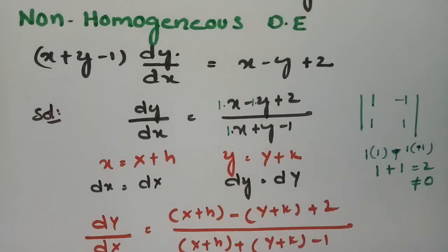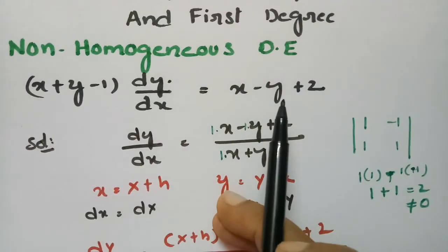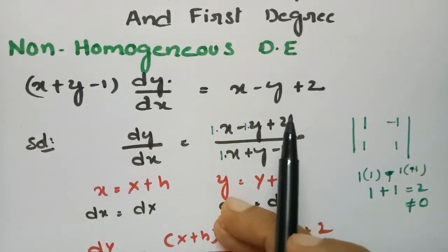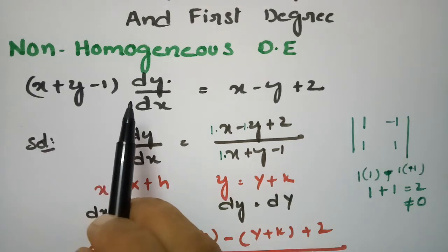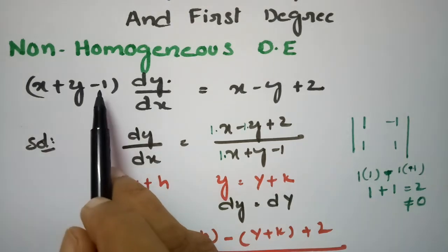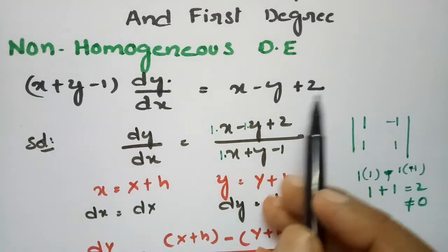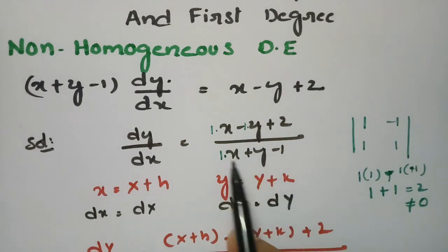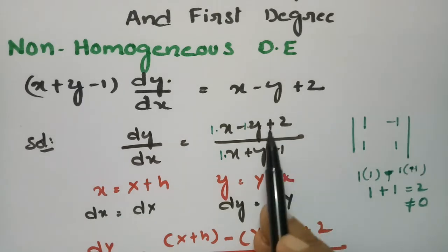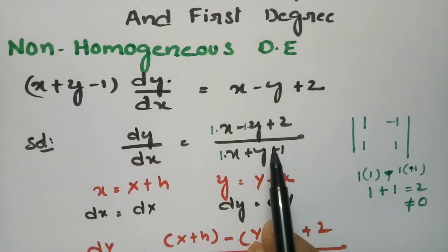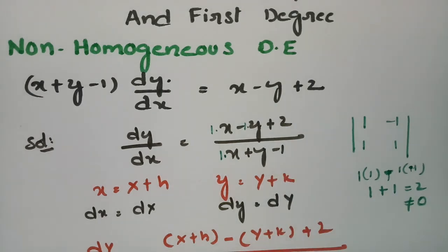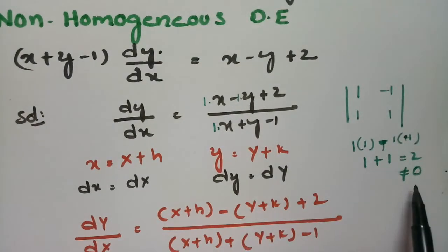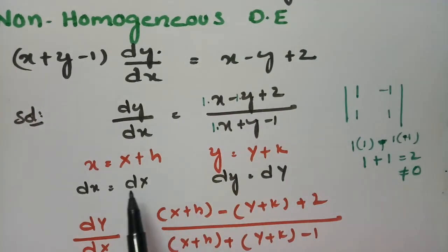To summarize: when numerals appear at the end in a differential equation, it indicates a non-homogeneous differential equation. dy/dx = (x - y + 2)/(x + y - 1). There are two types of non-homogeneous methods. First check if a1*b2 - a2*b1 equals 0 or not — if not equal to 0, use this model.